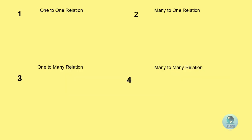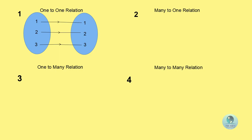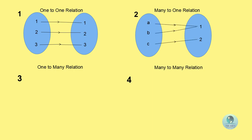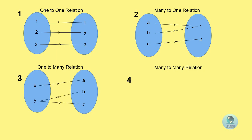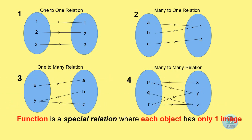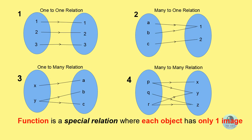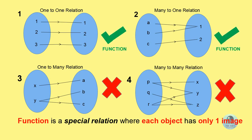There are 4 types of relation. The first one, 1-to-1 relation — every object is connected to only 1 image. The second one, many-to-one relation — at least 2 different objects share a same image. The third one, 1-to-many relation — 1 object produces at least 2 different images. The fourth one, many-to-many relation — it's actually a combination of many-to-one and one-to-many relation. Function is a special relation where each object has only one image. From this definition, we can conclude that only 1-to-1 relation or many-to-one relation is considered a function.